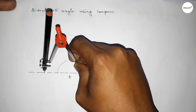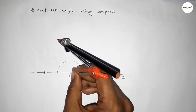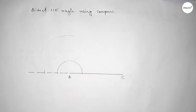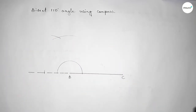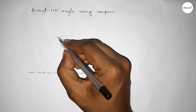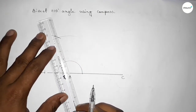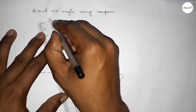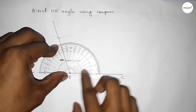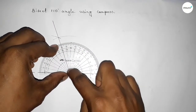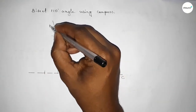Taking the length and putting the compass on point B and cutting here. Then putting the compass here with the same length and cutting here, so both curves intersect at a point. Now joining this line to get the 110-degree angle. Checking the angle — this is approximately 110 degrees.